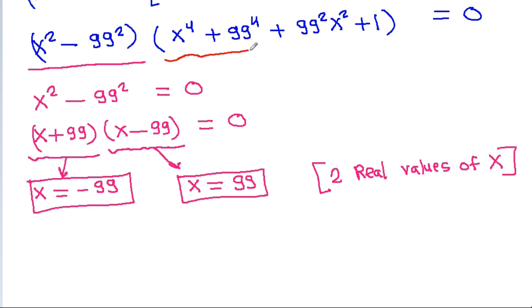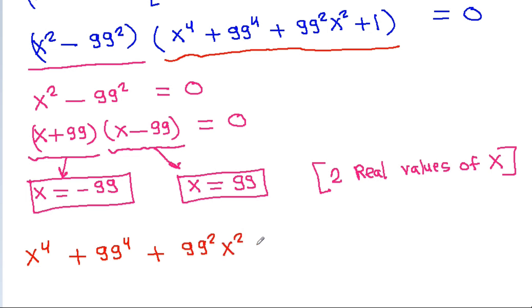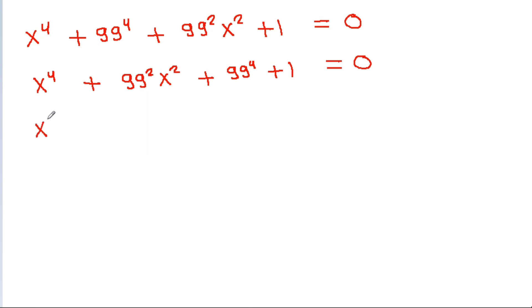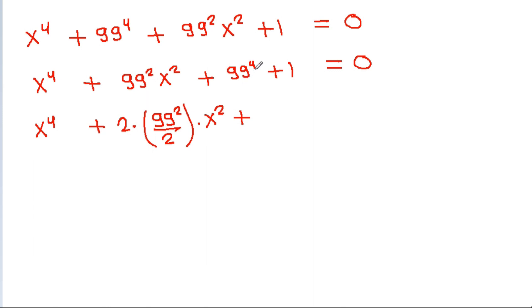And if the other part is 0, if x⁴ plus x² times 99² minus 99⁴ minus 1 is equal to 0, then it is x⁴ plus 99² times x² minus 99⁴ minus 1 is equal to 0.